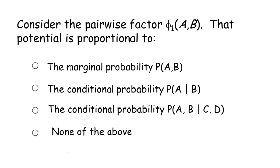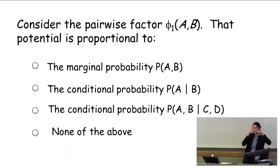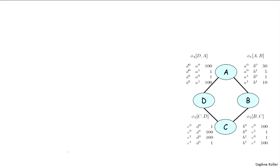So now let's think about what these factors mean. And let's think about this factor phi one of AB, which is this local happiness between A and B. And let's think about how it relates to the probability distribution. So we might think that this is the marginal probability of A and B in the joint distribution. Or maybe it's the conditional distribution of A given B, or maybe B given A. Or maybe it's the joint probability of A and B given C or D. The answer is, it's none of the above.